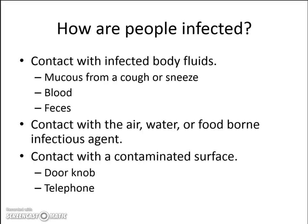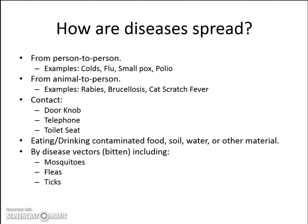Cover your cough. If you contact some sort of contaminated surface — doorknobs, telephones — somebody right before you may have just coughed into it. That's why we're always telling students to wash their hands frequently. Some examples of person-to-person spread diseases are cold, flu, smallpox, and polio. Your animal can have a disease and give it to humans — like rabies, brucellosis, or cat scratch fever.